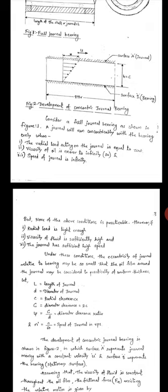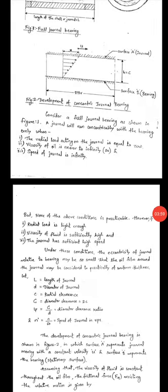However, if first the radial load is light enough, viscosity of fluid is sufficiently high, and the journal has sufficient high speed, under these conditions the eccentricity of the journal relative to bearing may be so small that the oil film around the journal may be considered to be practically of uniform thickness.